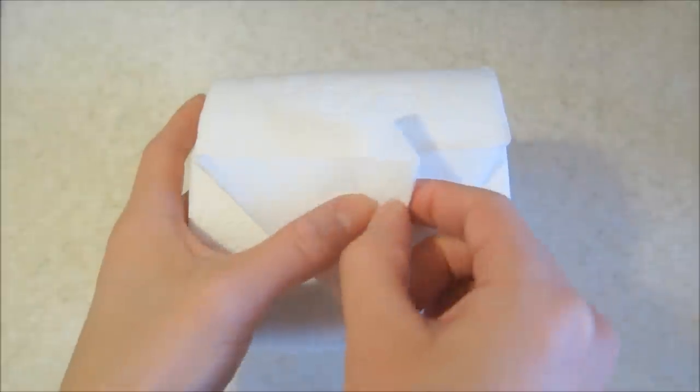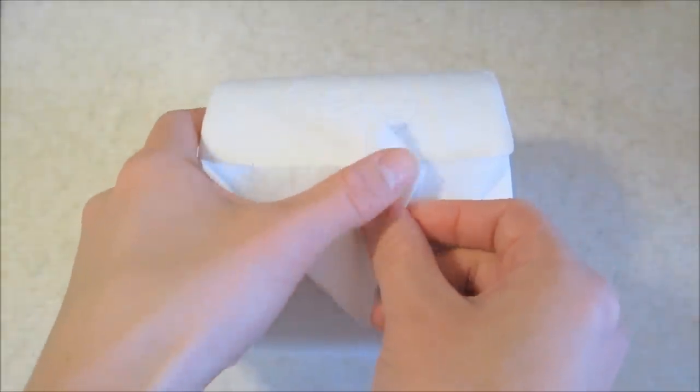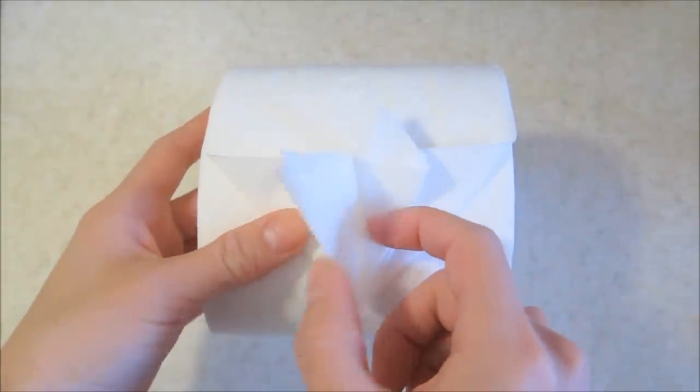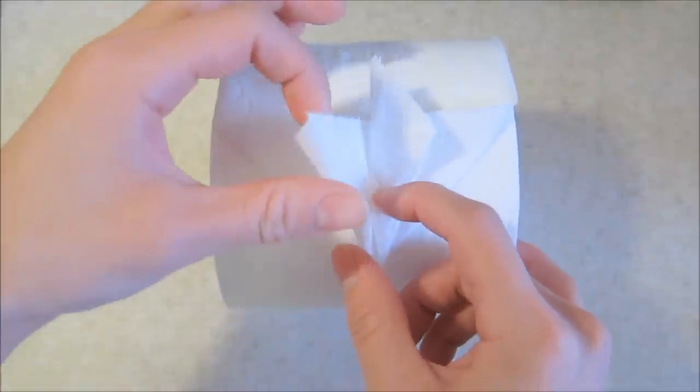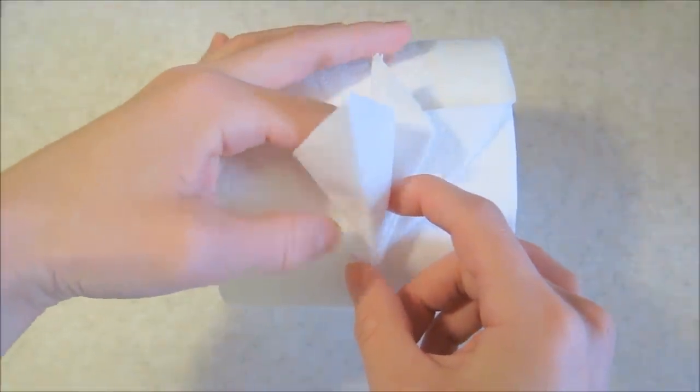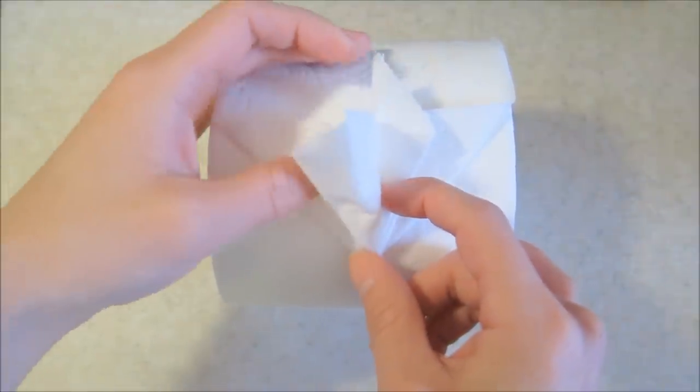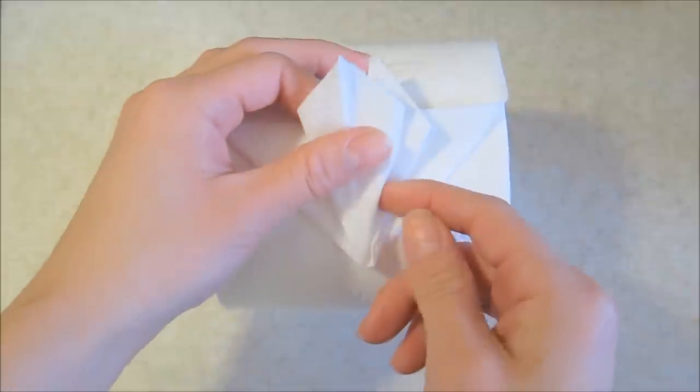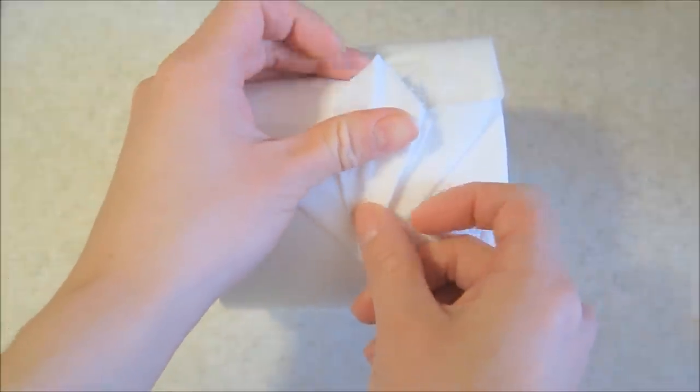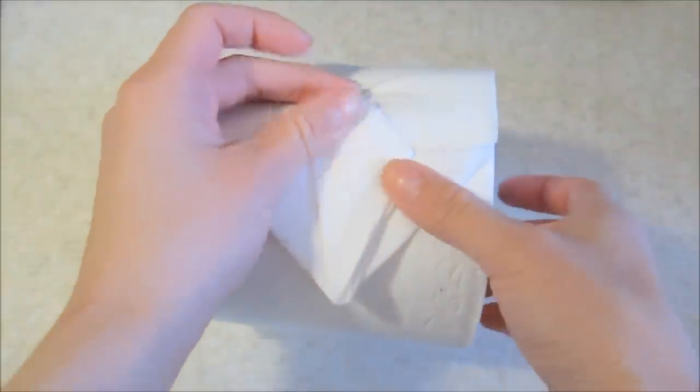we're going to fold it over to get it out of the way and repeat the same thing with this flap over here. Again stick our finger in and then flatten to create a shape that looks like this.